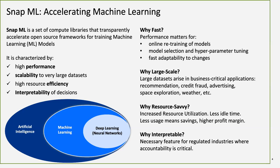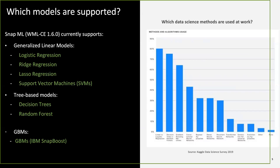Looking at a 2019 survey, classical machine learning algorithms remain the most commonly used — linear/logistic regression, decision trees, and GBMs like XGBoost and CatBoost. Snap ML focuses on accelerating the most commonly used algorithms: Generalized Linear Models (logistic regression, ridge, lasso, SVMs), tree-based models (decision trees, random forests), and gradient boosting machines via IBM's own SnapBoost.